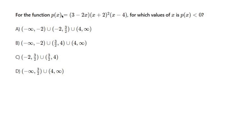For the function p of x equals 3 minus 2x times the quantity x plus 2 squared times the quantity x minus 4, for which values of x is p of x less than 0?